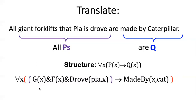Now you might not have chosen the same predicates I did. So I use G for giant, F for forklift and Drove(x,y) or Drove(pia,x) for Pia drove x. And I also used the name cat for the company caterpillar.